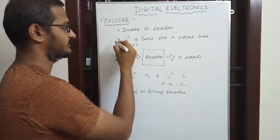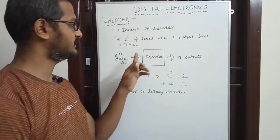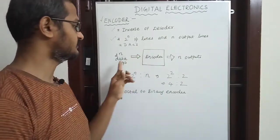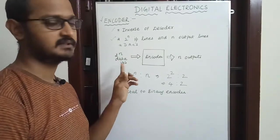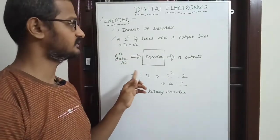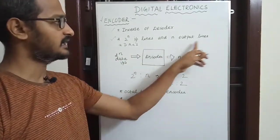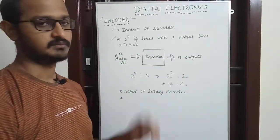An encoder takes two to the power of N input lines and produces N output lines.